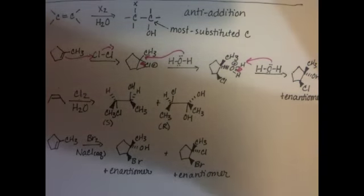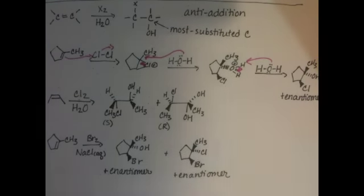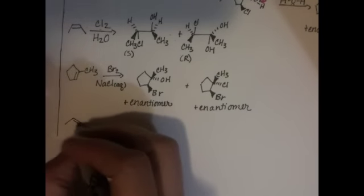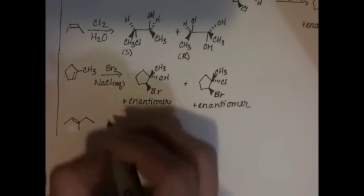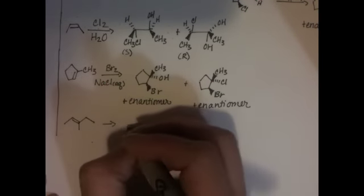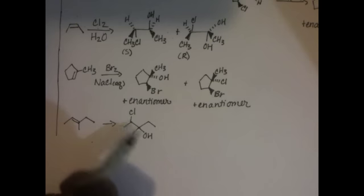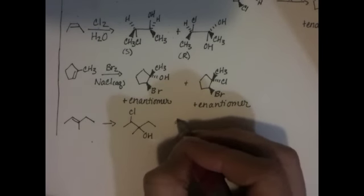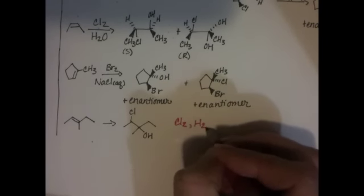Okay, so two practice problems for this section. Let's take this alkene and convert it into this product. We just learned how to take an alkene and add a chlorine and a hydroxide group to it right there. So the reagents that we're going to use for this are Cl2 in water.